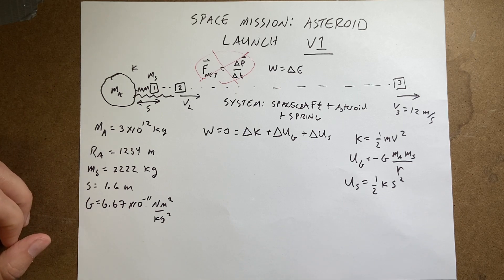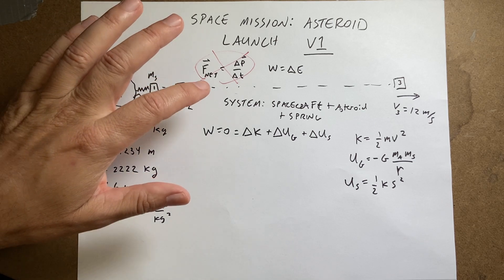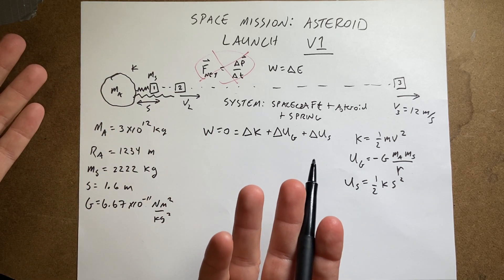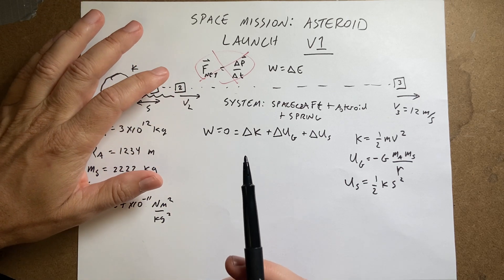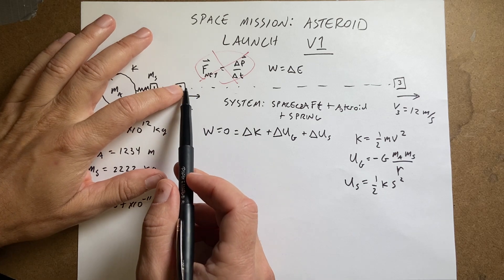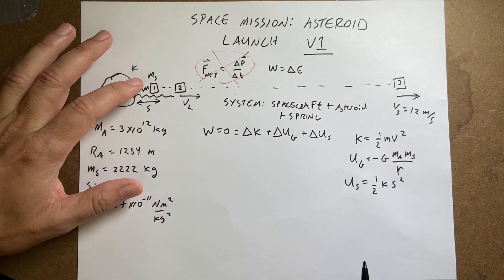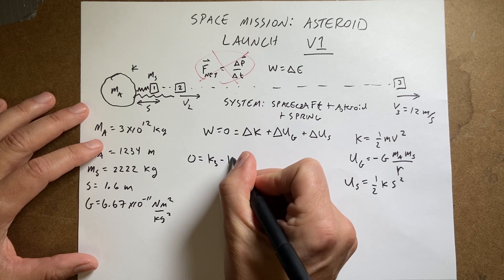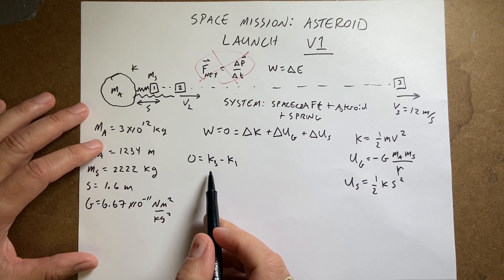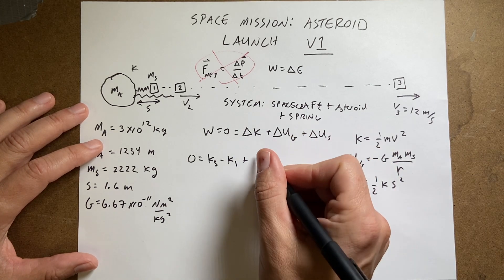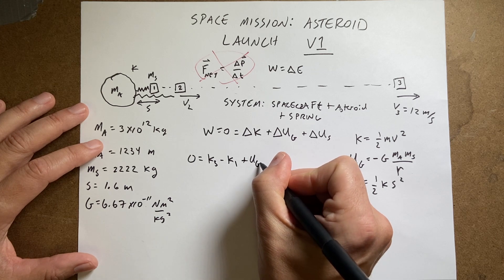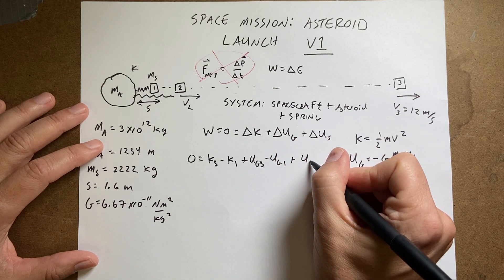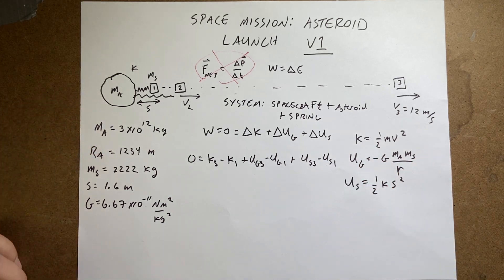Now the question is what do I do — go from 1 to 2, 2 to 3? I don't really care about position 2. I could do work-energy from 2 to 3, but I can just skip it. So let's go from 1 to 3 and write: zero equals the change in kinetic energy — K3 minus K1, final minus initial — plus the change in gravitational potential energy, UG3 minus UG1, plus the change in spring potential energy, US3 minus US1.